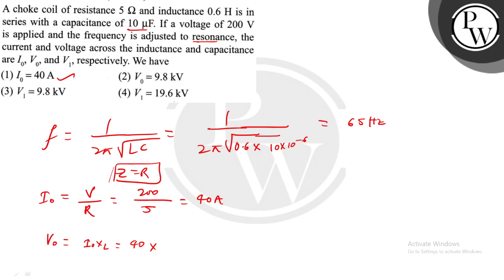Omega is 2π × f. Frequency is known: 2π × 65 into 0.6 henry. Calculating this, we get 9.8 kilovolt. So V₀ across inductance is 9.8 kilovolt.